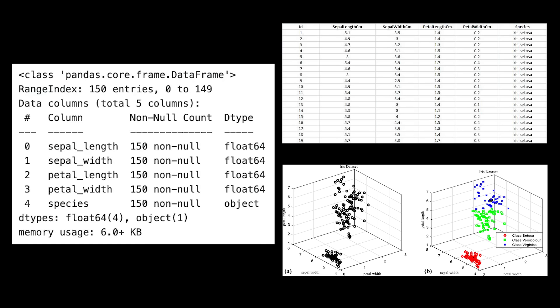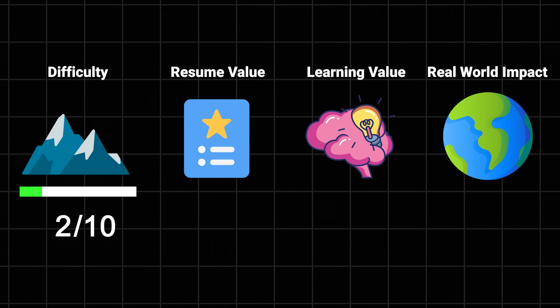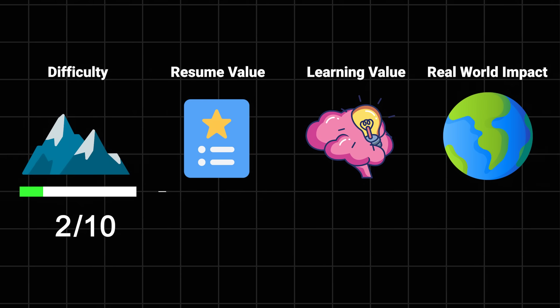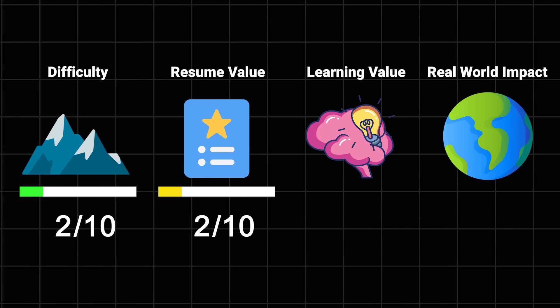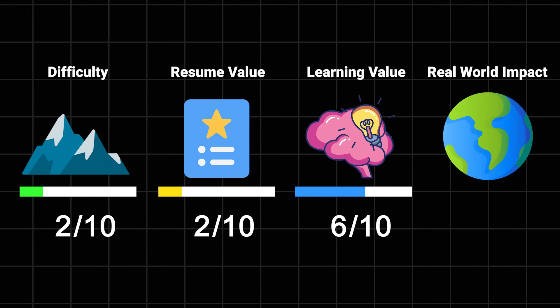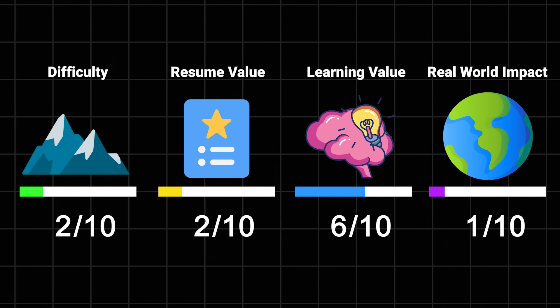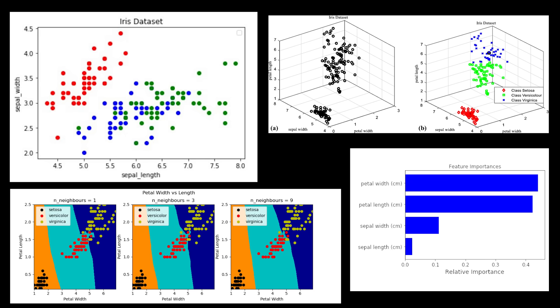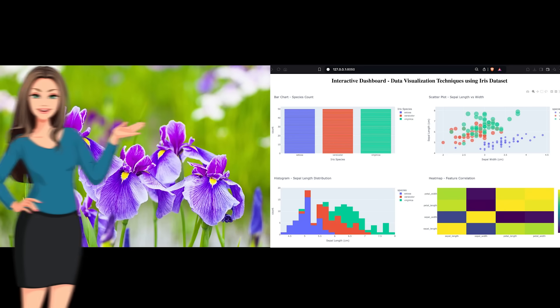The best part: this dataset is clean and simple. No missing values, no weird outliers. I wish all datasets were this nice. I'll rate this a 2 out of 10 for difficulty because it's about as easy as it gets in ML. 2 out of 10 for resume value because everyone's done it, but hey, you got to start somewhere. 6 out of 10 for learning value because you'll understand the fundamentals of classification. And 3 out of 10 for impact, unless you're really into botany. Quick tip: don't skip the visualization part. Plot those features, make some scatter plots. It's one of the few datasets where you can actually see why your model makes certain decisions. Trust me, that won't happen often in your ML journey. Also, you can show it to your mom who probably loves flowers.